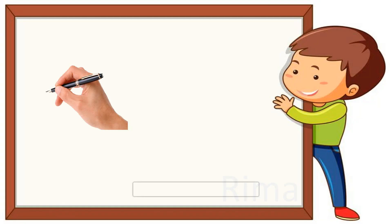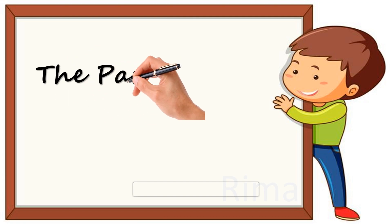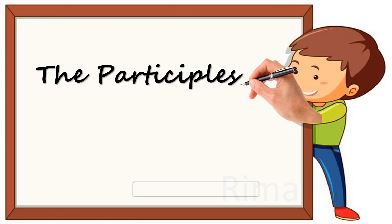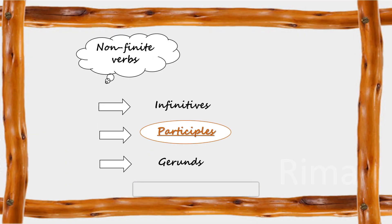Hello students, hope you all are fine and utilizing the free time productively. Today, I am going to discuss with you all a new chapter — that is participles. As discussed before, verbs are of two types: finite and non-finite. Non-finite verbs have three categories: infinitives, participles, and gerunds. Infinitives we have already discussed in the previous video. In today's video, I am going to discuss particularly participles.